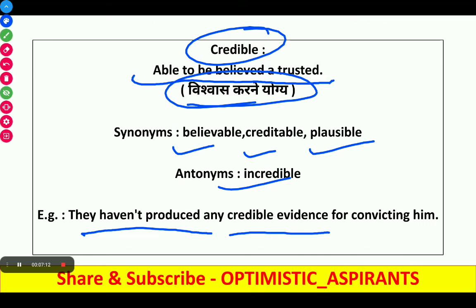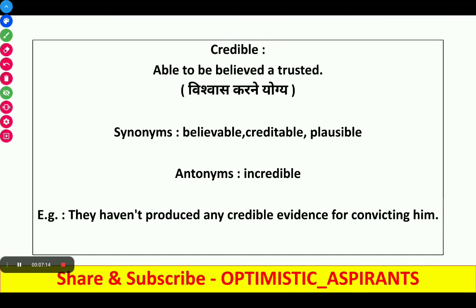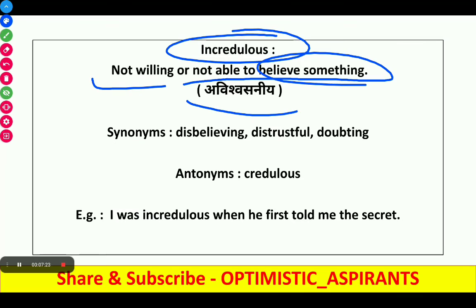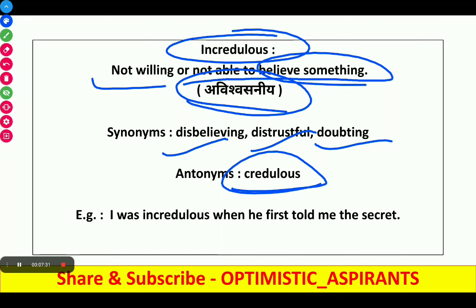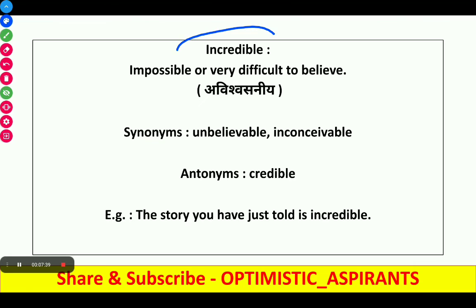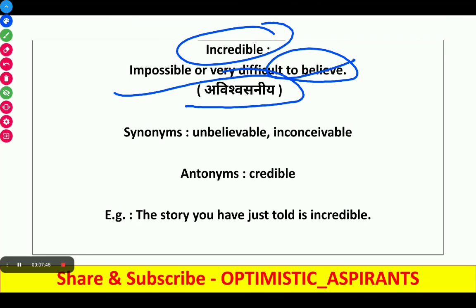Next word is incredulous. It means not willing or not able to believe something. Synonyms are disbelieving, distrustful, and doubting. Antonym is credulous. Example: 'I was incredulous when he first told me the secret.' Next word is incredible. It means impossible or very difficult to believe. Synonyms are unbelievable and inconceivable. Antonym is credible. Example: 'The story you have just told is incredible.'